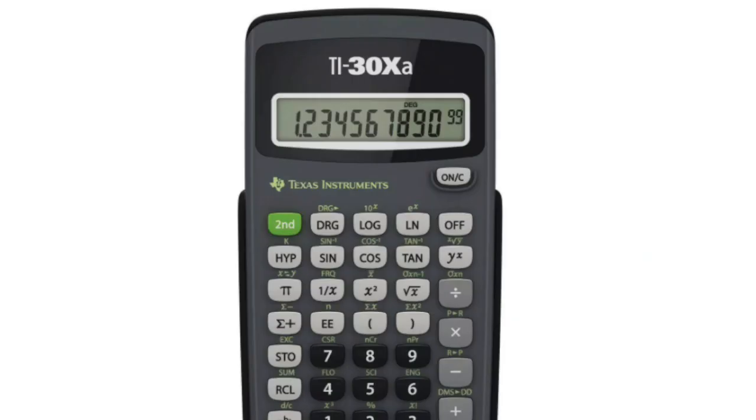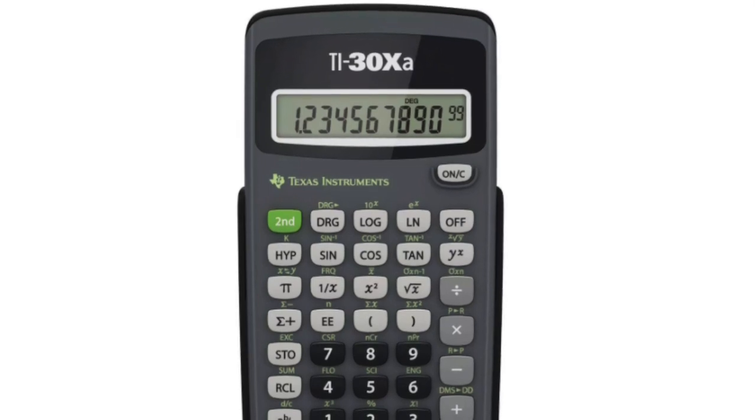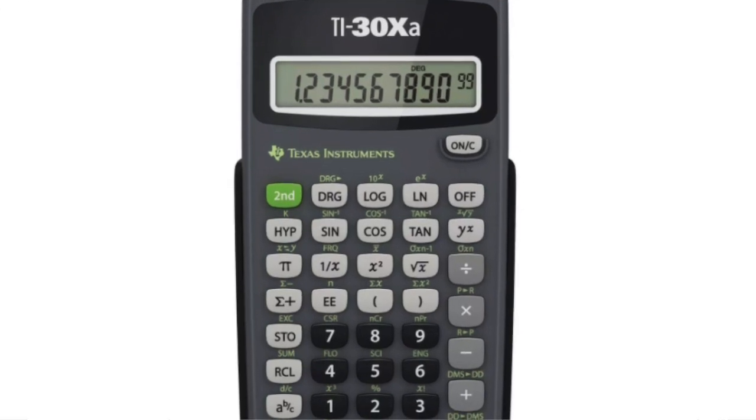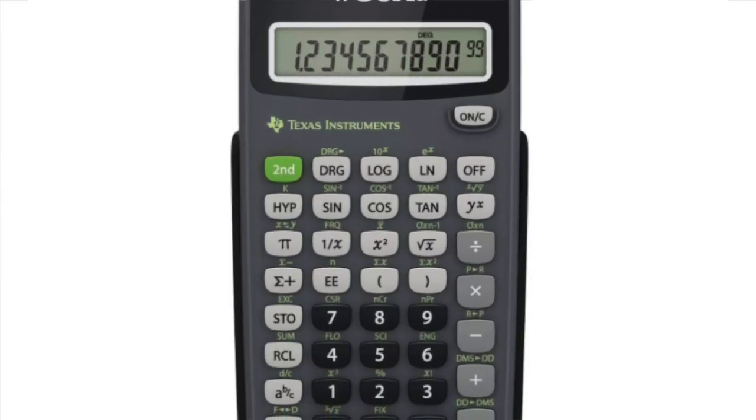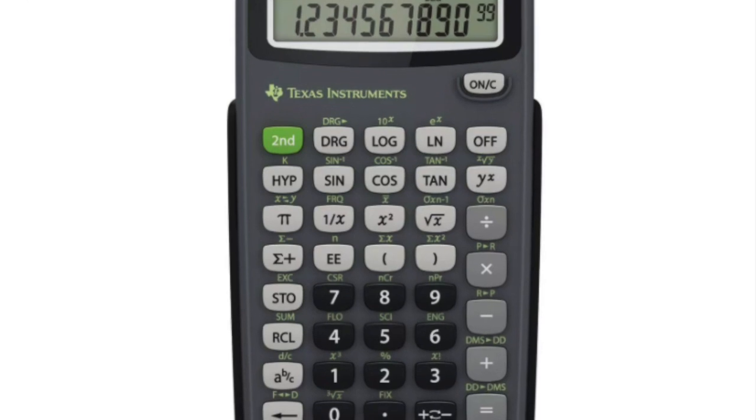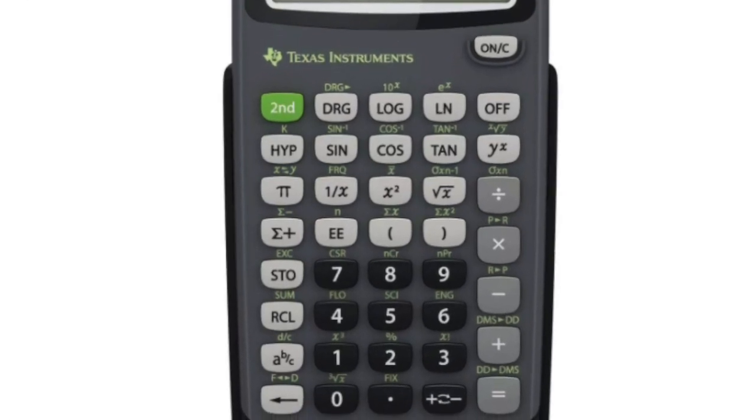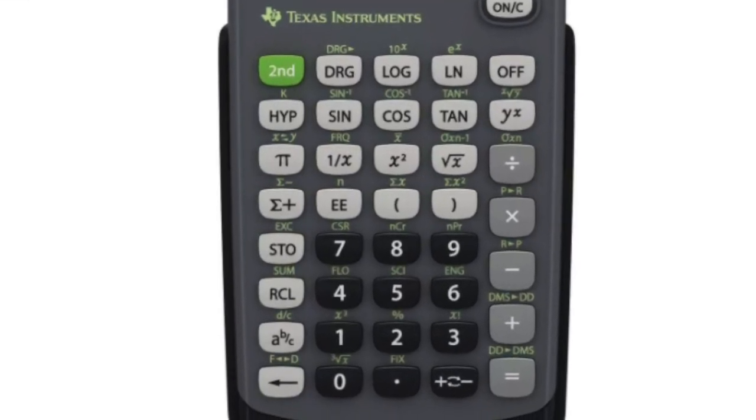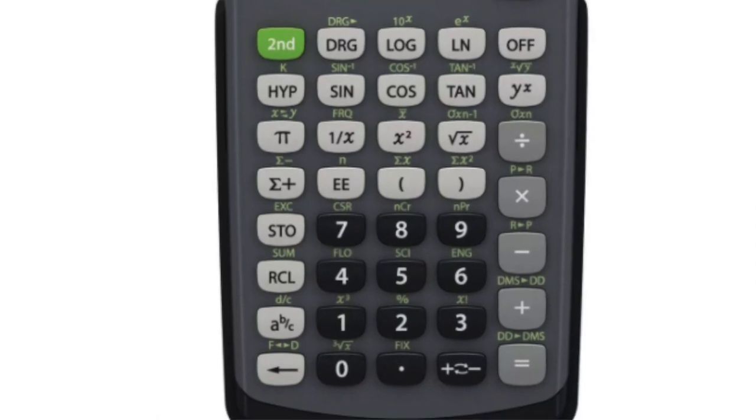The difficulty with whatever scientific calculator you might have is there is no standard location where the probability tools are kept. So when in doubt, you should Google your calculator model and put the word 'probability' after it, and that should help you find it if you can't locate it yourself.